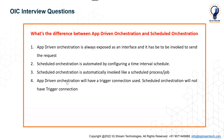App-driven orchestration will always have a trigger connection, which is the entry point. Whereas scheduled orchestration will not have any trigger connection because it is automated — we have the schedule instead.